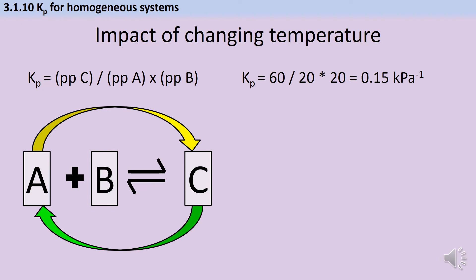We've established that increasing the temperature will shift the position of the equilibrium of this endothermic reaction to the right hand side, making more of product C. But will that impact the equilibrium constant Kp?